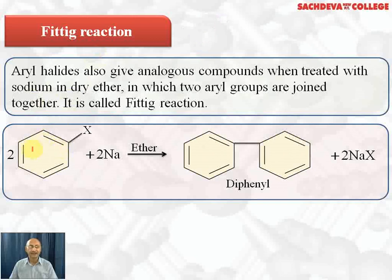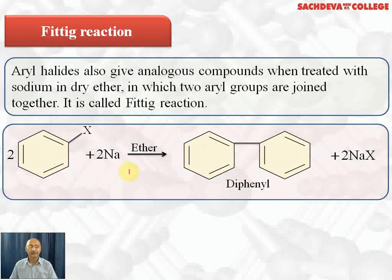Next, the Fittig reaction: two moles of aryl halide plus two moles of sodium metal in dry ether give diphenyl plus 2NaX. Similar to this is the Ullmann reaction, in which iodobenzene or para-nitrochlorobenzene is treated with copper metal in ether as solvent to give diphenyl. The Ullmann reaction is similar to Fittig but uses copper metal and aryl halides such as iodobenzene (where the C–I bond is weaker) or para-nitrochlorobenzene (where the C–Cl bond also breaks easily).